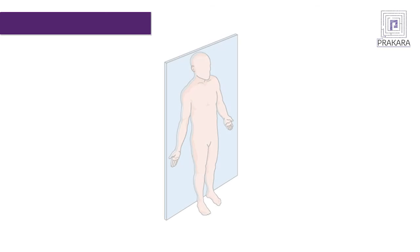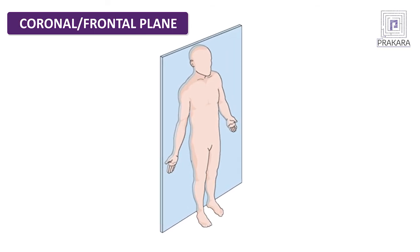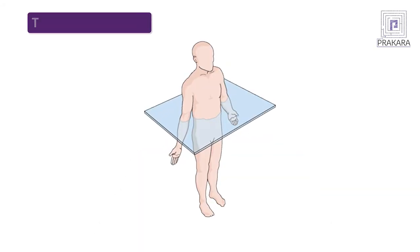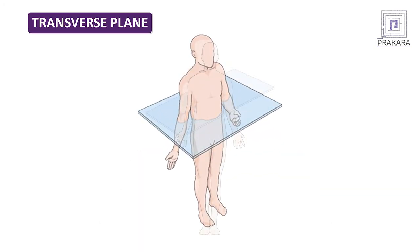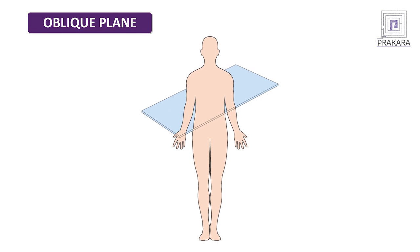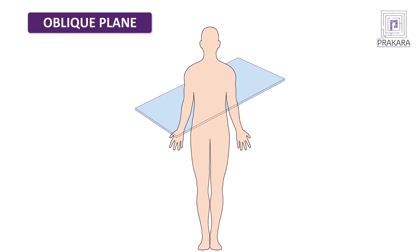The next plane is the coronal or frontal plane, another vertical plane which passes from left to right and divides the body into anterior and posterior portions. The third plane is the transverse or cross-sectional plane, which is a horizontal plane dividing the body into superior and inferior parts. An oblique plane is any plane which passes at an angle other than 90 degrees to the other planes.